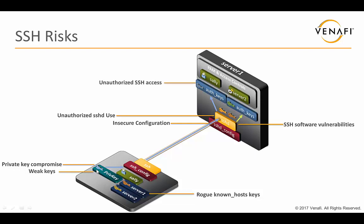Moving back to the server side: SSH provides access to servers, and one of the key things to be aware of is unauthorized SSH access. Without an inventory of your SSH environment you don't know what access is being provided. A key area of unauthorized access is root access — it's not a best practice to allow SSH access to the root account, but many administrators aren't aware of this. Allowing root access lets an attacker go directly after the root account over the SSH connection. You also have risks from terminated employees and backdoor keys — authorized keys providing access that you're not tracking. You might not know whether an employee placed a key for later use, or whether an attacker who temporarily compromised an account left a key they can leverage later.